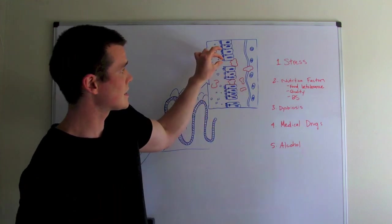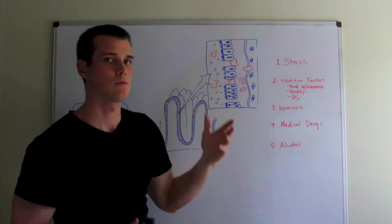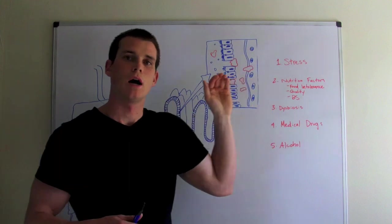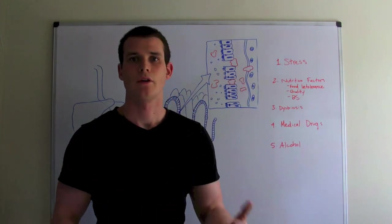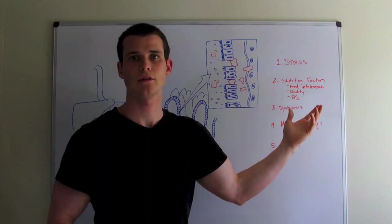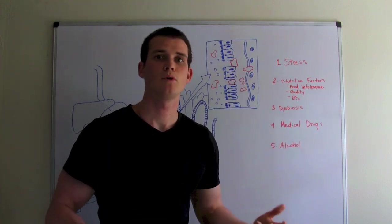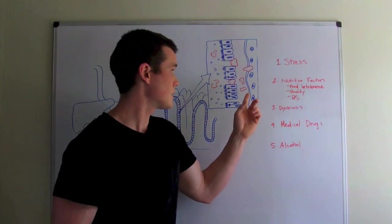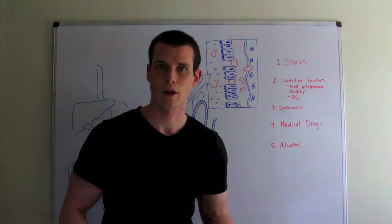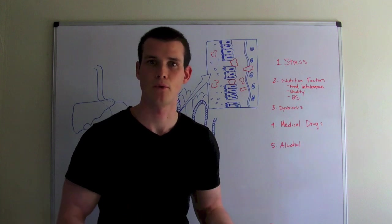So during inflammation it starts to separate and you create these gaps, and once those gaps are formed, undigested food particles, bacteria, and other substances can get into the circulation. All of a sudden the immune system starts to kick on because the immune system thinks that these particles are foreign invaders and it wants to take care of the debris.